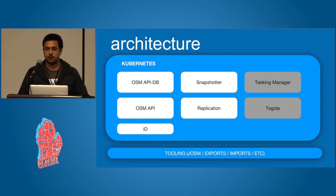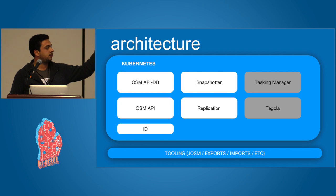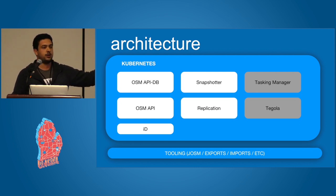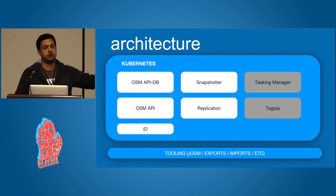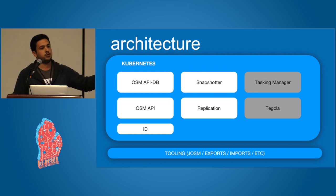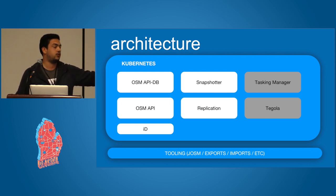There's the snapshot tool I was talking about for different years. In the pipeline, we're thinking of adding the Tasking Manager as well, and Tegola — which is a vector tile rendering pipeline. Traditionally the OSM architecture has a raster pipeline; we're just going to skip that and go straight ahead to a vector rendering pipeline.